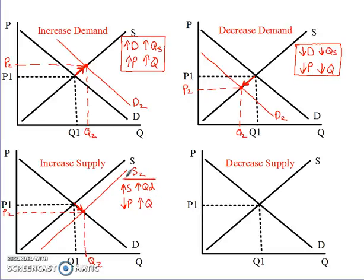Price went down and quantity went up. So those are the four things we can say: increased supply causes an increase in quantity demanded, a decrease in price, and an increase in quantity. This is really great for consumers — they get more of the good at a lower price.